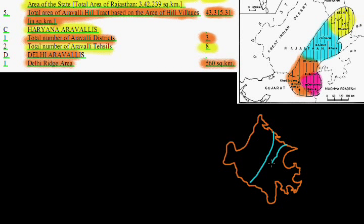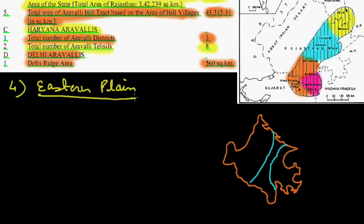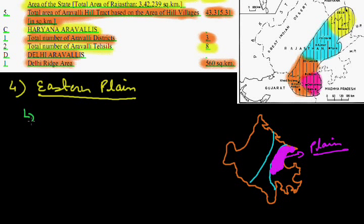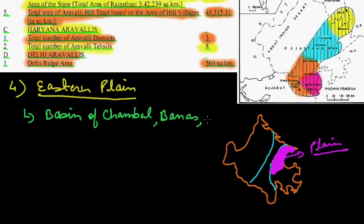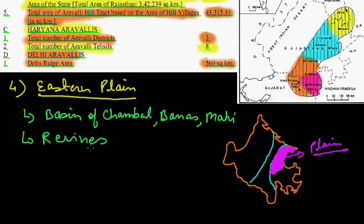The Aravali is extended from here to this part. The fourth classification of Rajasthan is the eastern plain region, which is actually a part of the Ganga drainage basin area — shown in pink color as you can see here. This plain is a basin of the Chambal, Banas, and Mahi rivers. The major landform seen in these regions is the ravines, also known as Bihar.